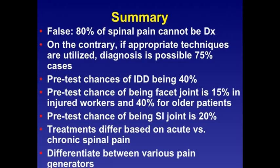Summary: it is shown that about 80% of spinal pain may be diagnosed when appropriate techniques are utilized, with diagnosis possible in about 75% of cases. The pre-test probability of IDD is high, around 40%. Pre-test probability of facet joint pain is about 15%, though injured workers and 40% of older patients typically have facet joint pain. Treatment differs based on whether the pain is chronic or acute. When differentiating spinal pain, the three most common areas are discogenic pain, facetogenic pain, and myofascial pain.